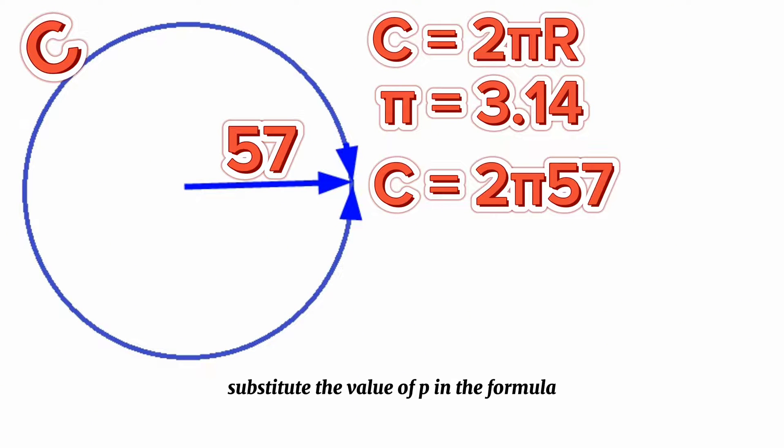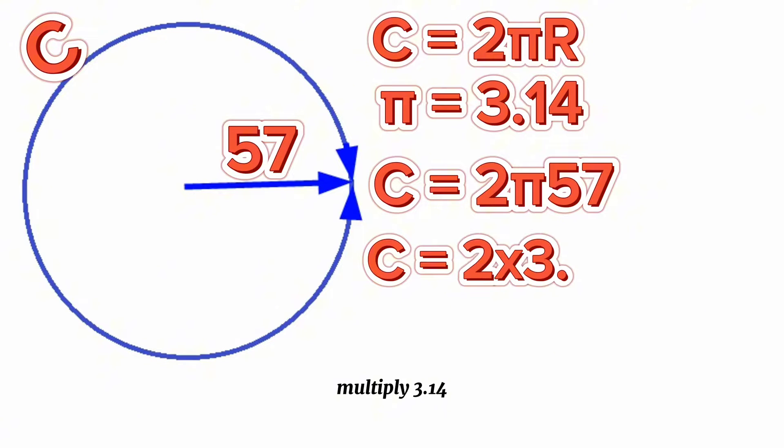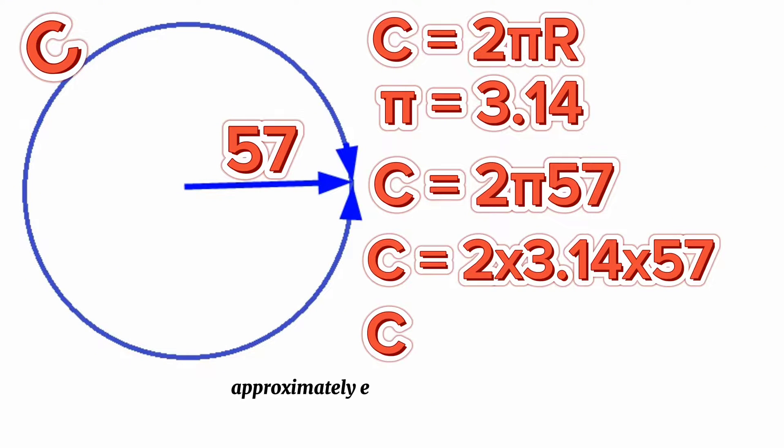Substitute the value of π in the formula and continue the calculation. Here, C equals 2 multiply 3.14 multiply 57. Calculating, we find C approximately equals 358 millimeters.